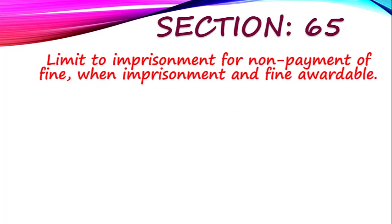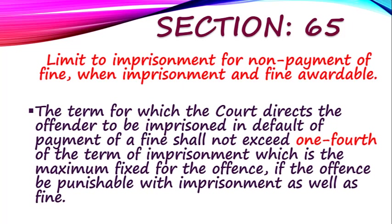Section 65 states the limit for this extended imprisonment. Section 65 clearly says that it shall not exceed one-fourth of the term of imprisonment. So the additional imprisonment for non-payment of fine shall not exceed one-fourth of the original term. For example, if a person was jailed for 20 years, the maximum additional imprisonment for non-payment of fine would be one-fourth of 20 years, which is 5 years. We cannot keep them in jail for more than that for non-payment of fine.